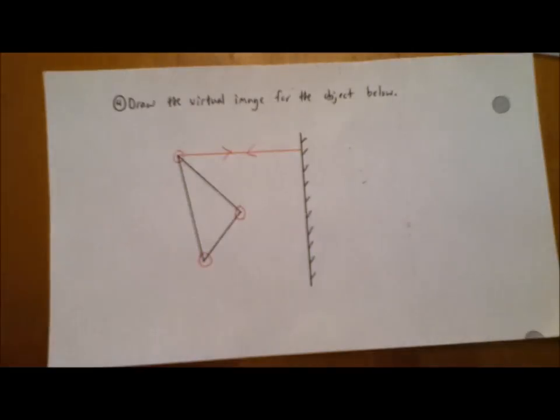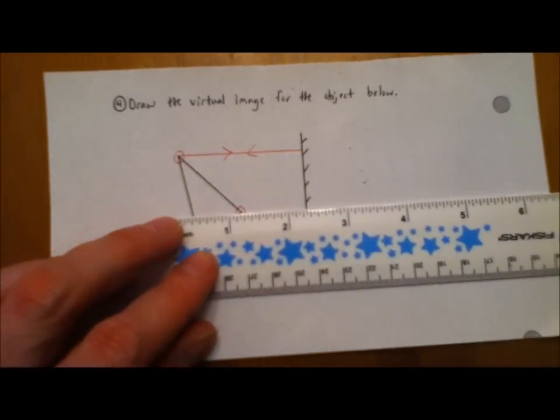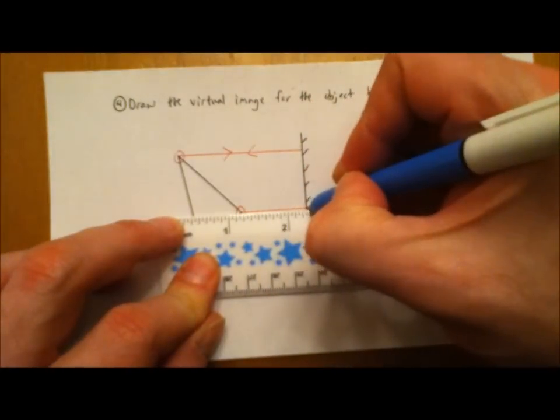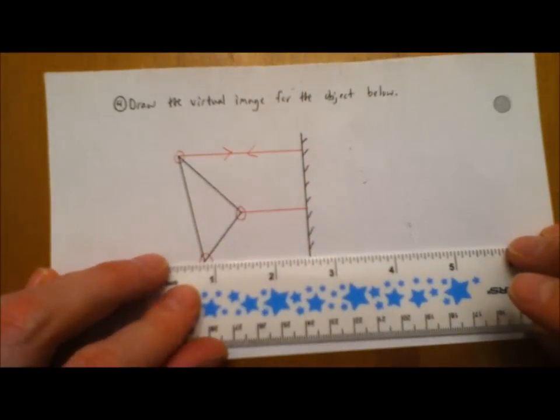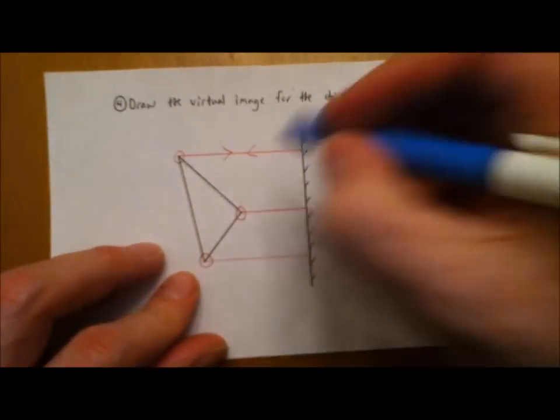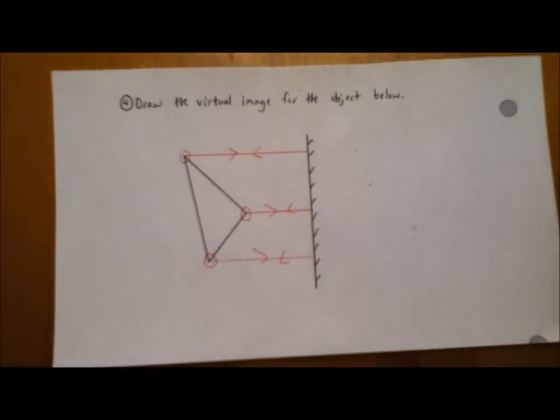The light will reflect back along the same path, and we will do the same thing for the other two points on the triangle, and now we're showing light hitting that mirror at a 90 degree angle being reflected along the same path.